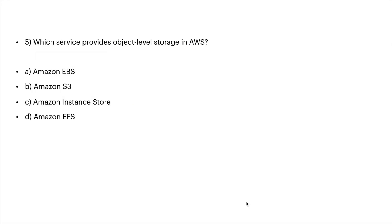The fifth question: which of the following provides object-level storage in AWS? A: Amazon EBS, B: Amazon S3, C: Amazon Instance Store, or D: Amazon EFS. The right answer is B: Amazon S3. Amazon EBS is Elastic Block Store that provides block-level storage, Amazon Instance Store is temporary block-level storage, and Amazon EFS is Elastic File System that provides shared file storage.